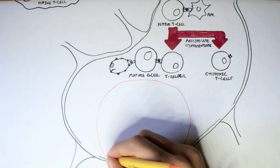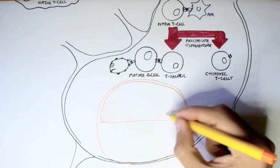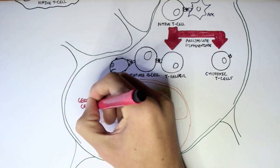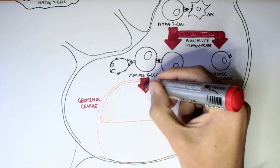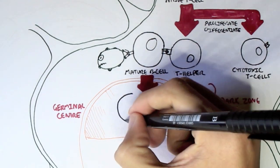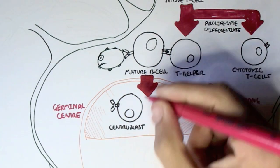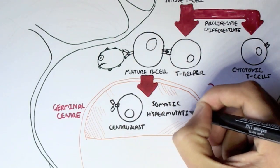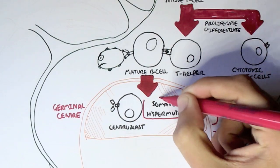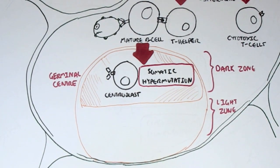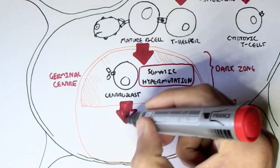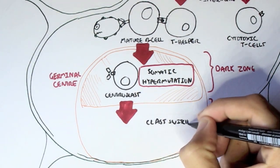Within the lymph node there is an area called the germinal center, which consists of a dark zone. When the mature B-cell becomes activated — from the T-helper cell, the antigen of a pathogen, or both — it will move into the germinal center, into the dark zone first, where it will undergo somatic hypermutation and become a centroblast. Somatic hypermutation causes mutations within the gene which further increases the affinity, diversity, and specificity of the B-cell's antibodies.